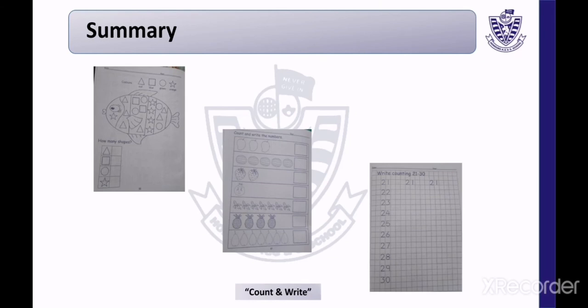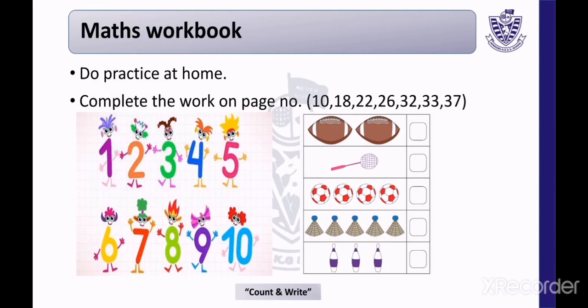In this video, we have learnt about shapes, count and write. At the end, we learnt how to write numbers from 21 to 30 in sequence: 21, 22, 23, 24, 25, 26, 27, 28, 29, and 30.